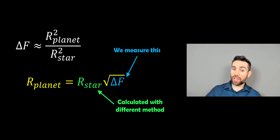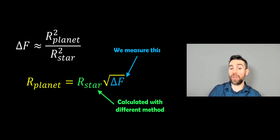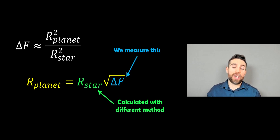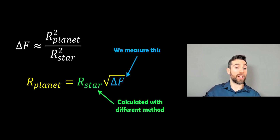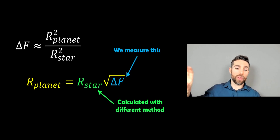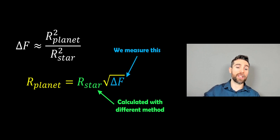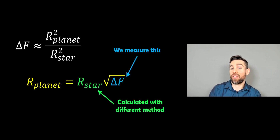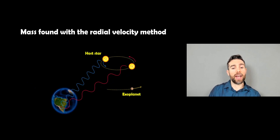The radius of the star would have been calculated from a different method — I've done another video on that. Normally it's already in a catalogue calculated from a different method, so we'd already have the radius of the star. Delta f is what we've actually measured with the transit. We can then calculate the radius of the planet, which is fairly straightforward to get. And once we have that, we can get the volume.